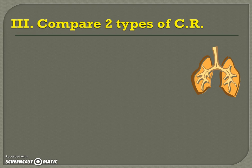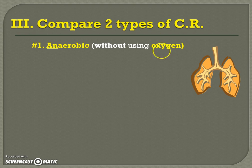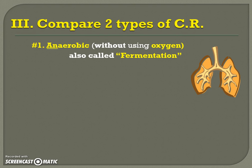Now, last time we did cellular respiration, we talked about two types: one with oxygen, one without oxygen. Do you remember what they were called? What's the one without oxygen called? Anaerobic — because that prefix 'an' means 'not' or 'without' whatever the next thing is. Anaerobic is without oxygen. We're going to actually learn a synonym now for anaerobic, which is the word fermentation.